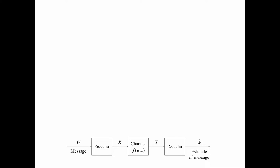Keep in mind this block diagram for the communication system that we are studying. Lemma 11.15 is the data processing theorem, which says that the mutual information between W and W-hat is less than or equal to the mutual information between X and Y.